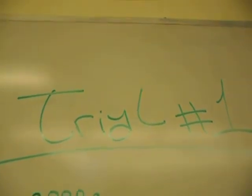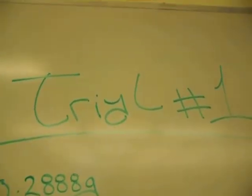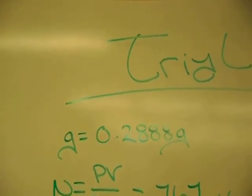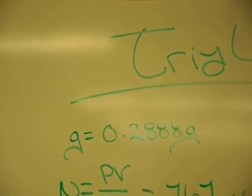The objective of this experiment was to identify the molar mass of an unknown volatile liquid. As in trial 1, we were able to identify the grams of our substance, 0.2888 grams.